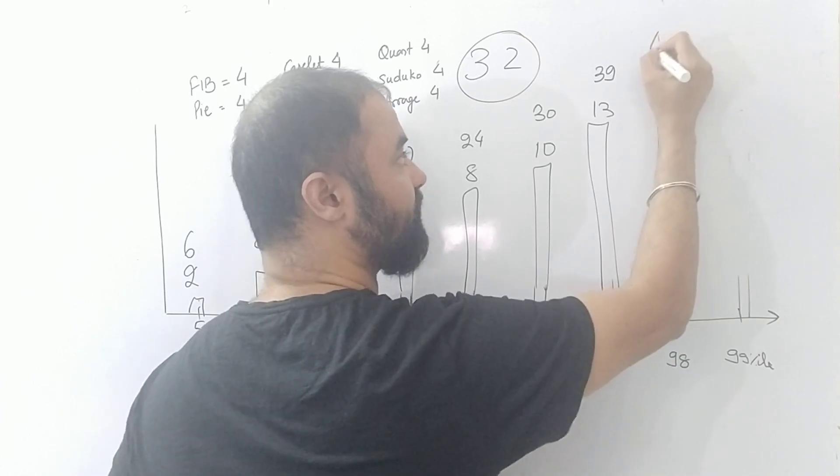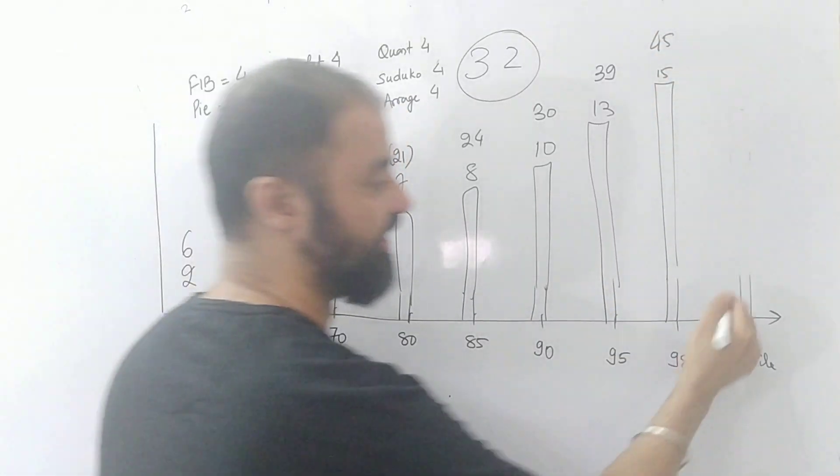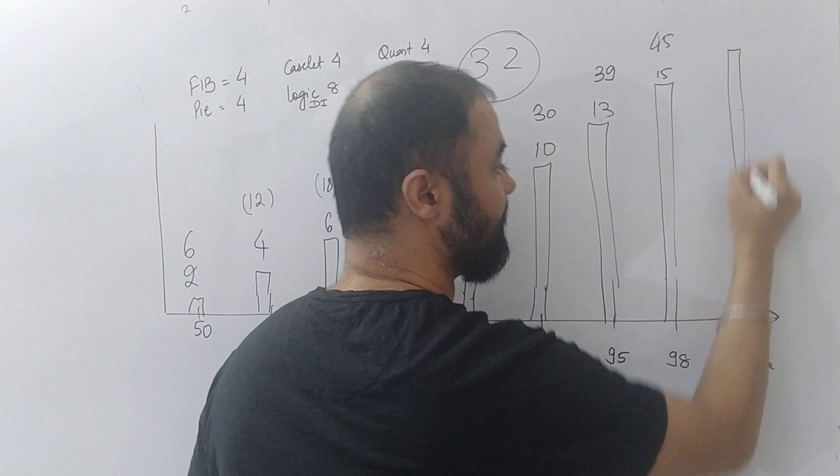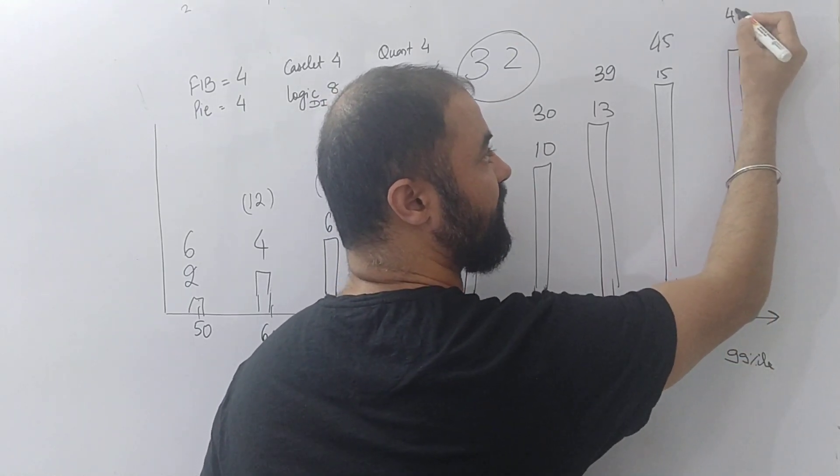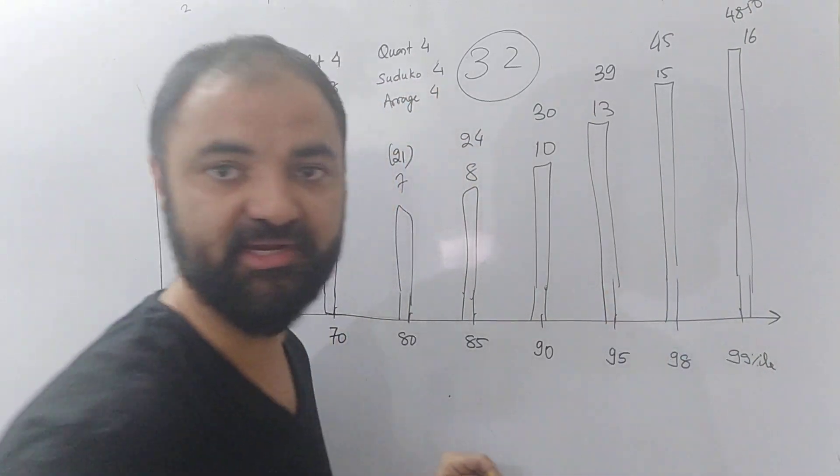15 correct which is 45 marks will be 98 percentile, and for 99 percentile you need to do 16 questions right. 48 to 50 marks will be around 99 percentile.